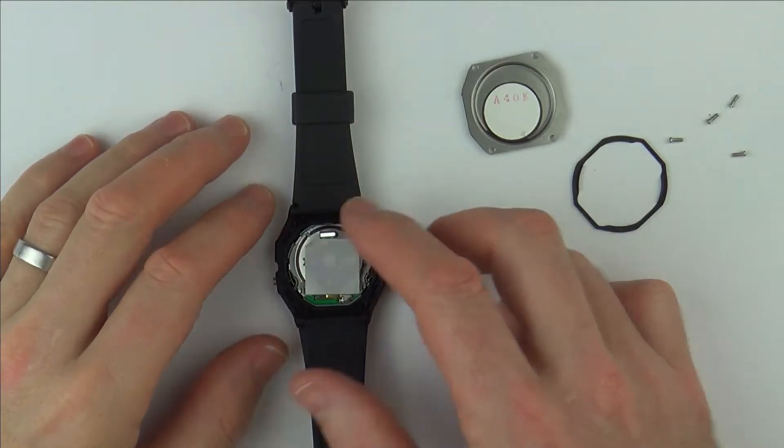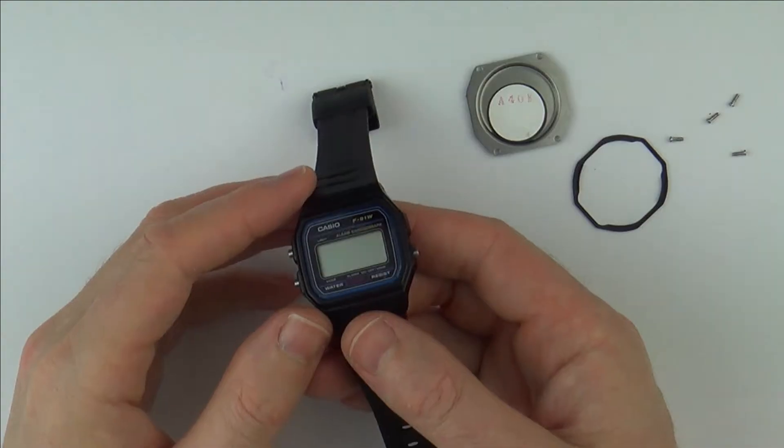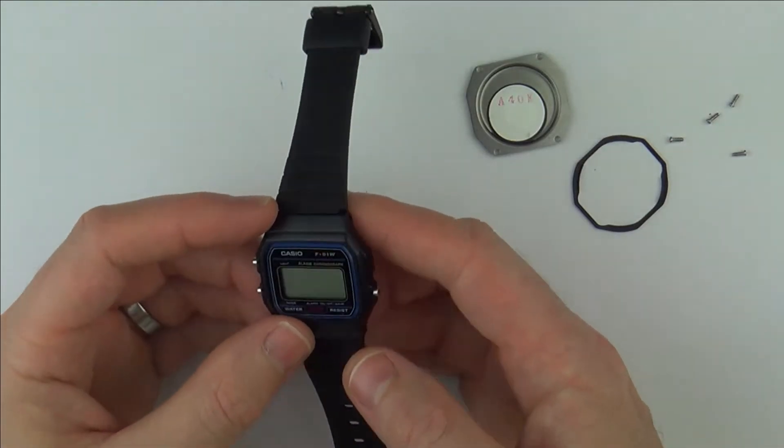If you're having problems when you change your battery on your Casio F91W, then it could be just a bad connection.